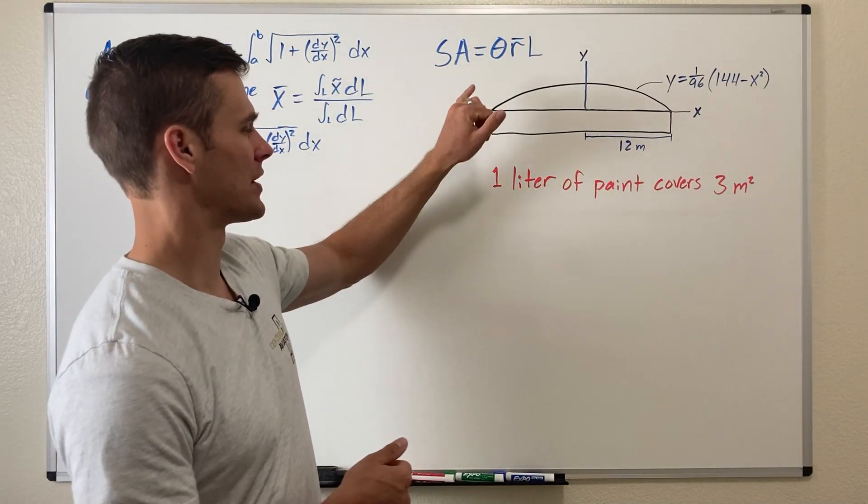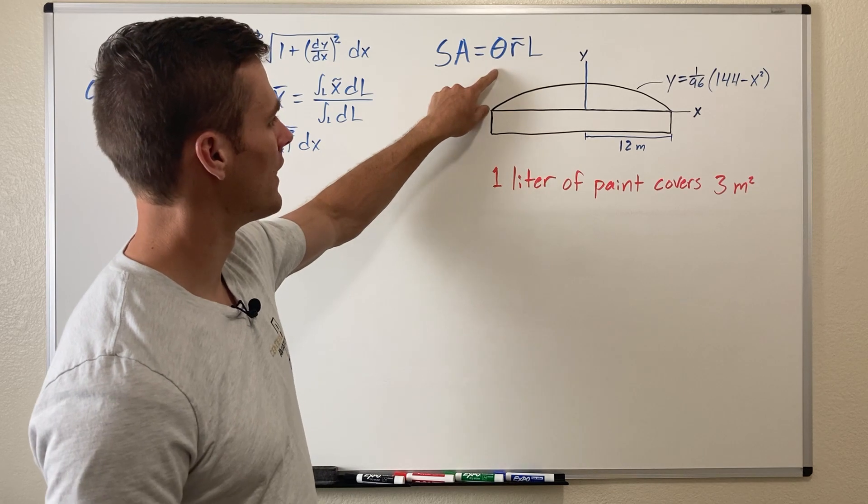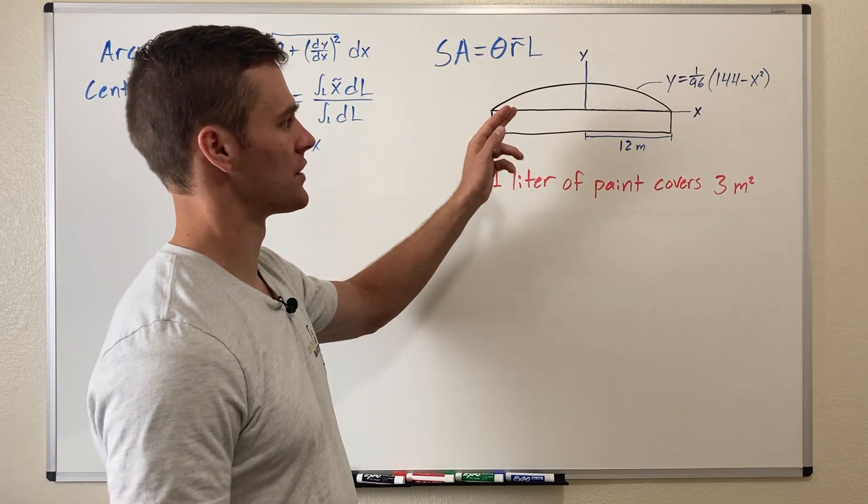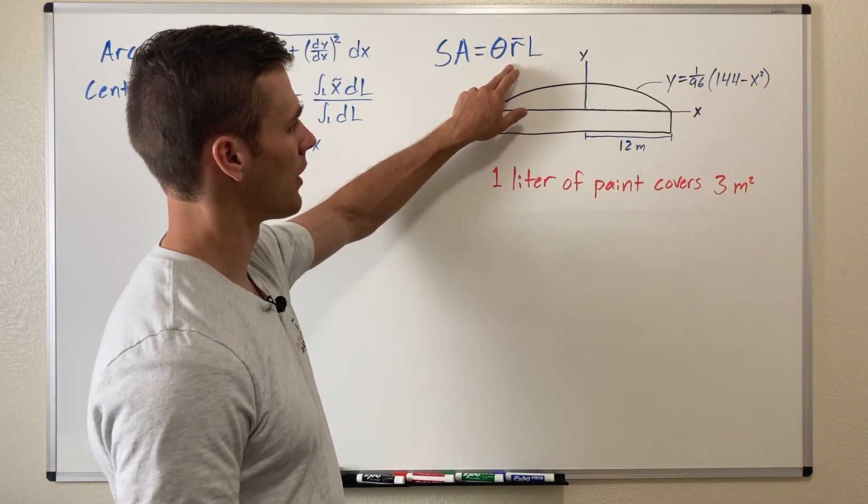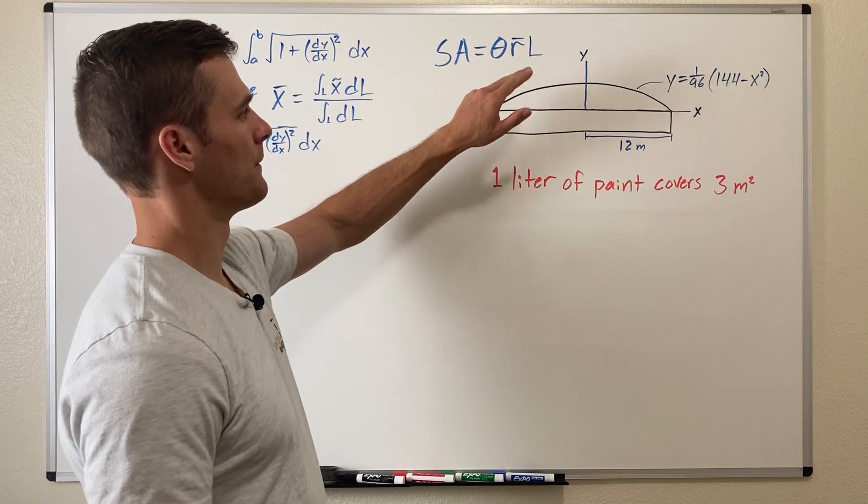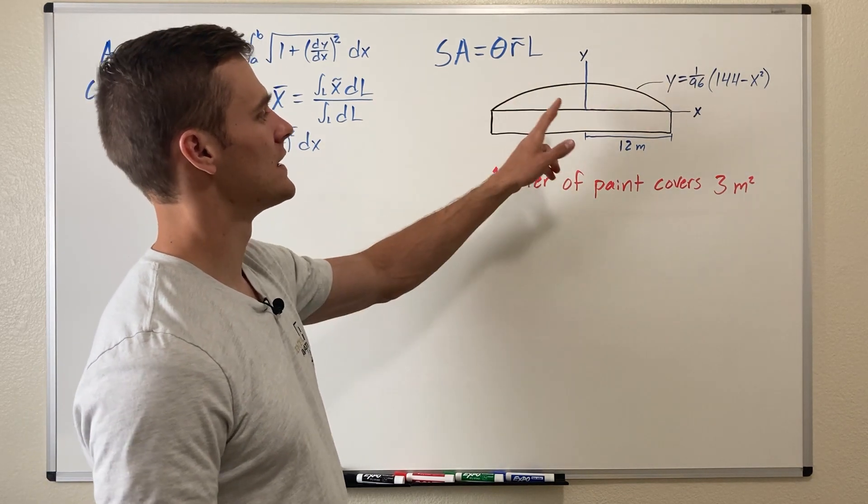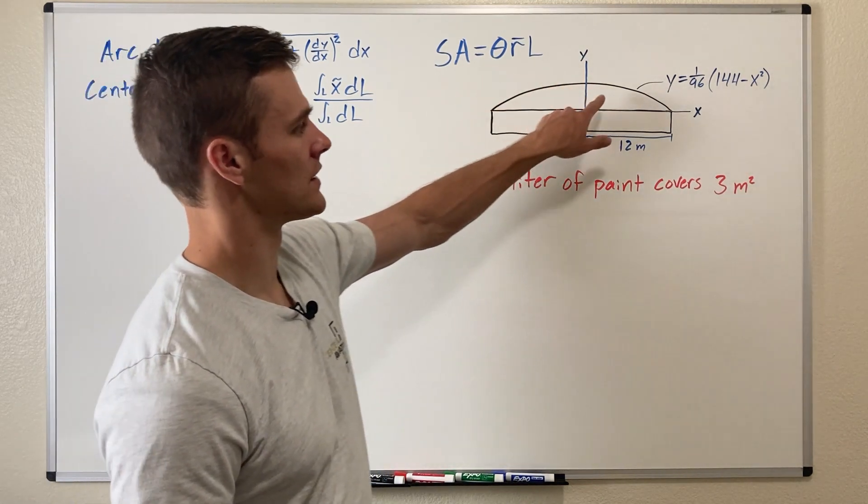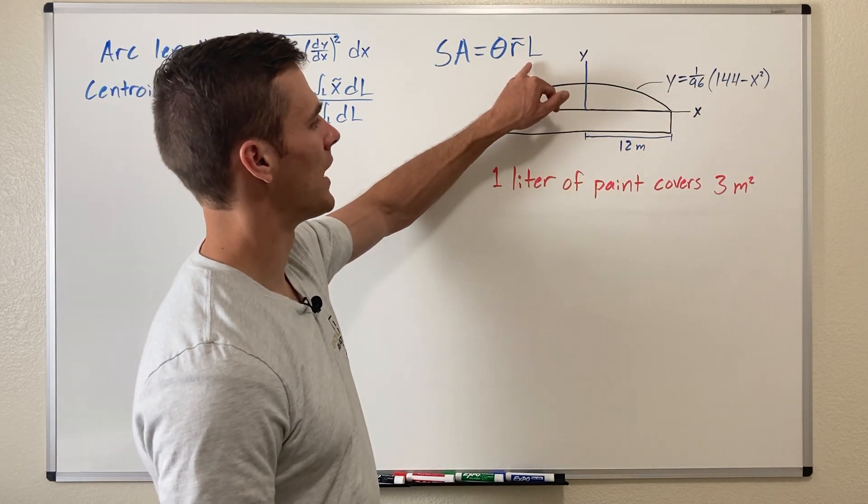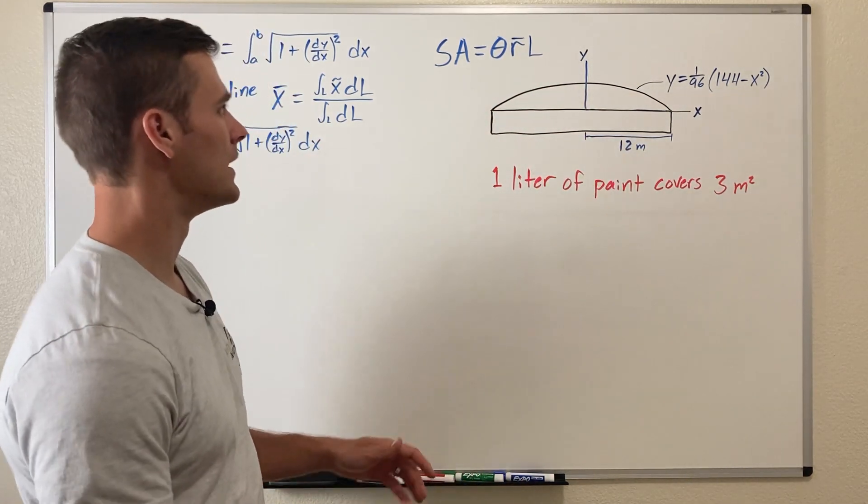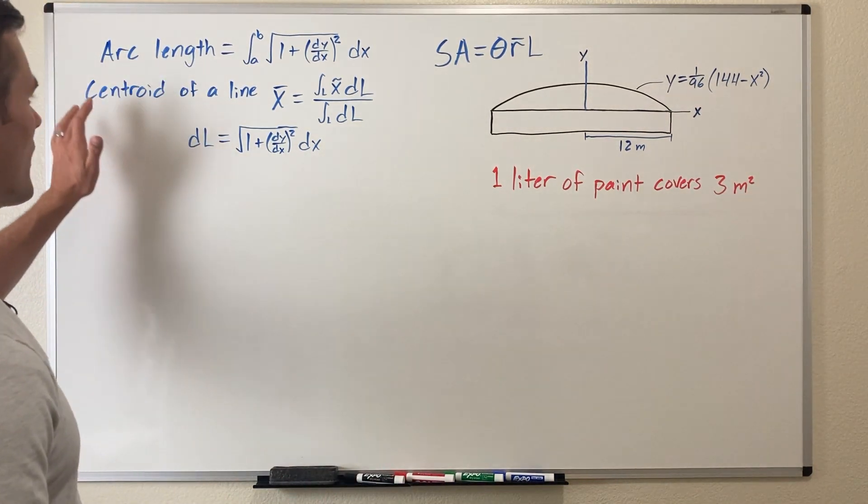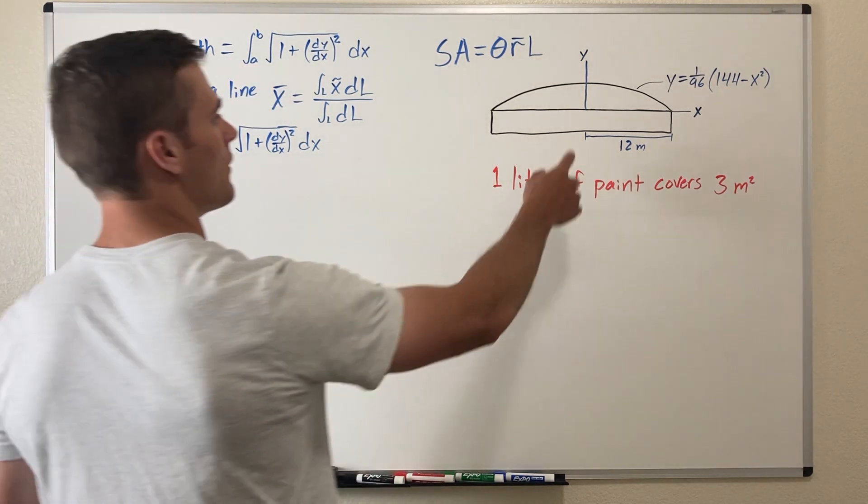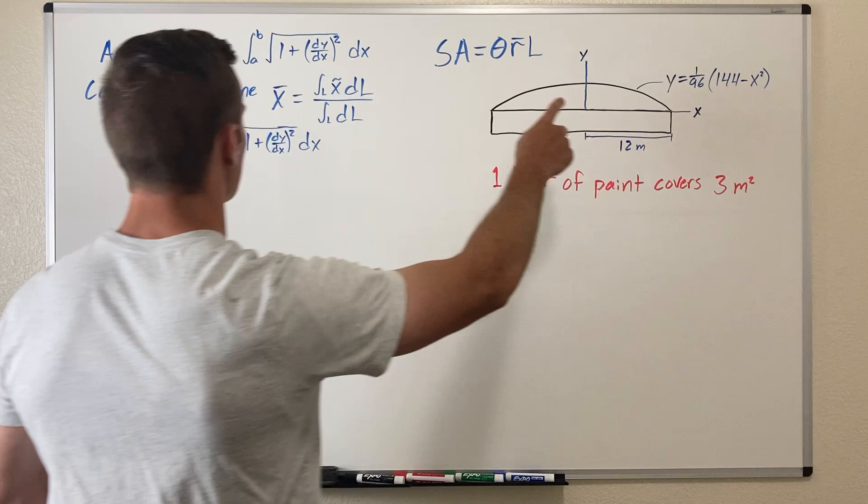So what we need to do to find the surface area is multiply theta, which is the angle of rotation that we're rotating this line about to get the surface area, multiplied by r bar, which is the centroid, the distance between the axis of rotation and the centroid of this line, and multiply that by the length of the line. So in order to do that we need to use some other equations. Now I have written out here the arc length which will be L of this part of the curve.